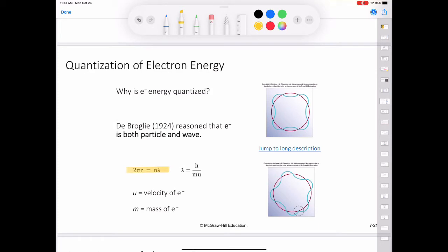Because n is an integer, it follows that r can only have certain values as n increases from 1, 2, 3, and so on. And because the energy of the electron depends on the size of the orbit or the value of r, its value must be quantized.